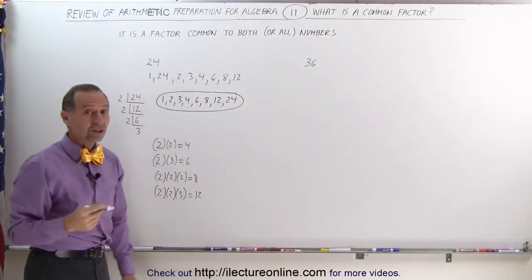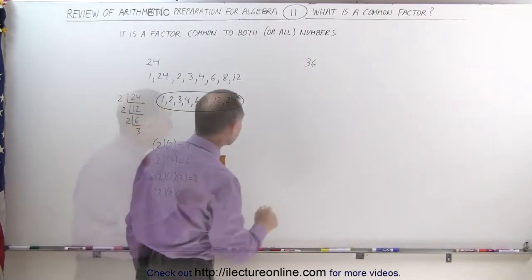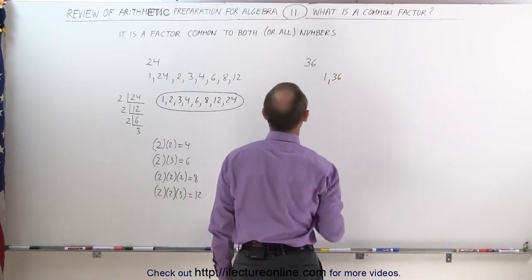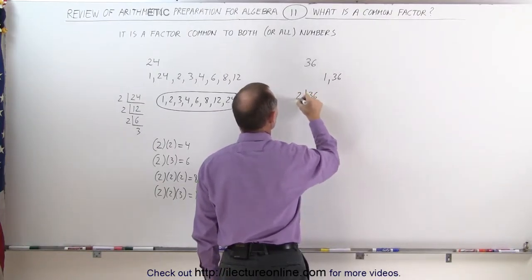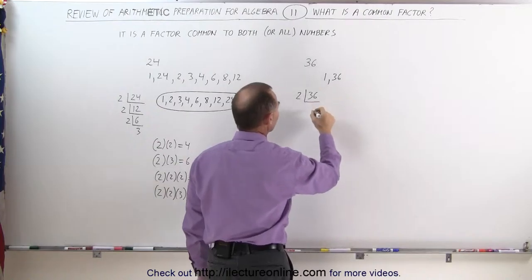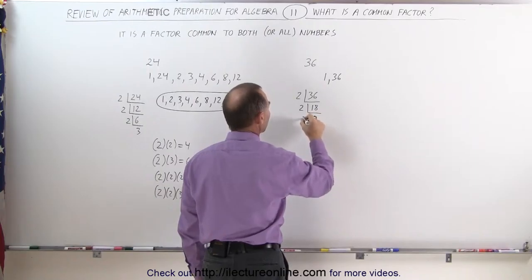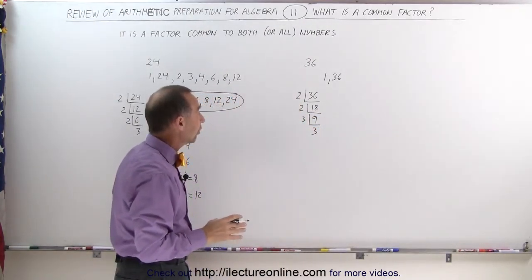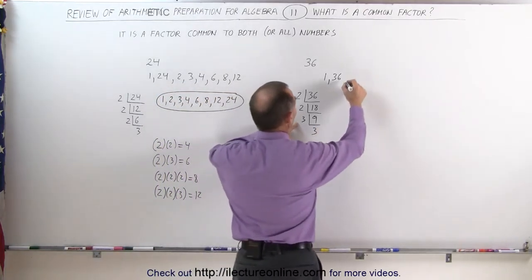Now let's find all the factors of 36 and then see which factors are common for both numbers. First of all, 1 and 36 are two of the factors. To find the others, we take 36 divided by 2 — the smallest prime number because it's even — we get 18. It's still even, so we divide by 2 again and get 9. Now we divide by 3 and get 3. To find all the factors other than 1 and 36, we take the numbers 2 and 3.